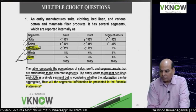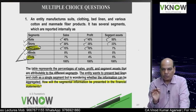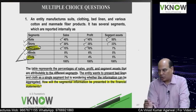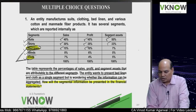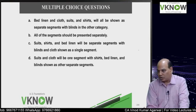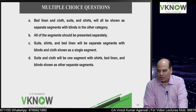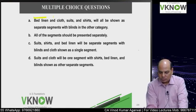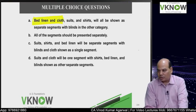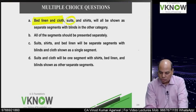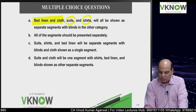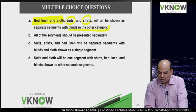How will the segment information be presented in the financial statement? If there are no options it becomes a four-mark question. Let us see what the answer would be with options. Option A: bad linen and cloth merged as one aggregate segment; suits and shirts shown as separate segments; and blinds in the other category.